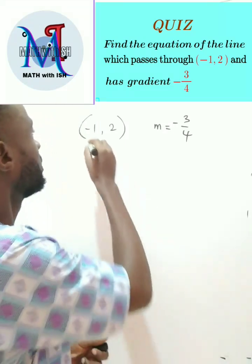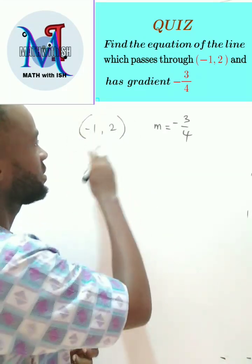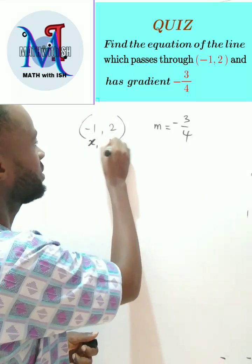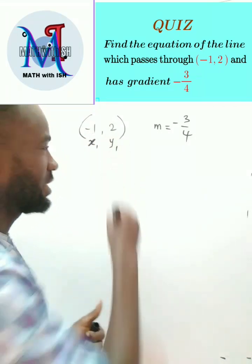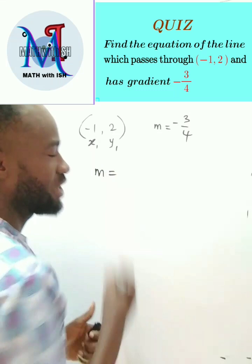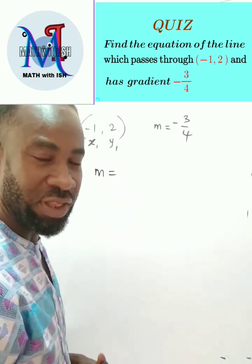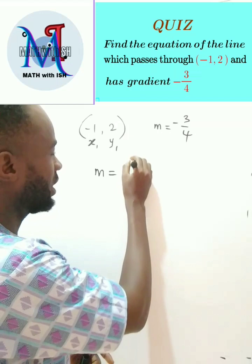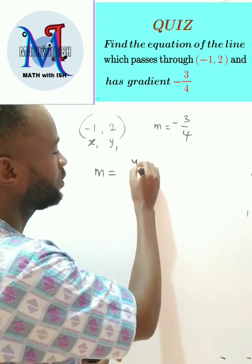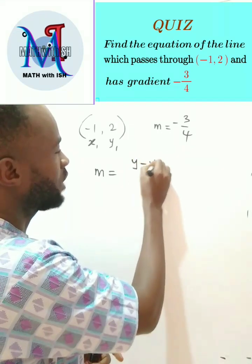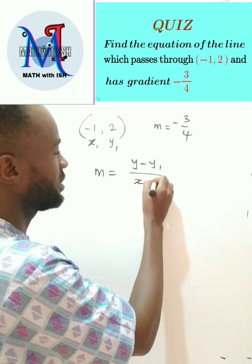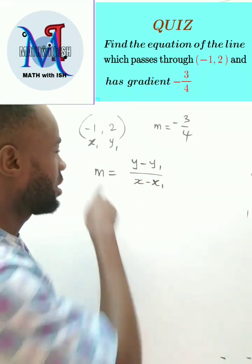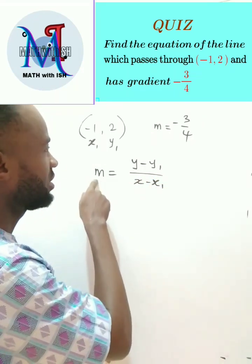Remember, these are coordinates, so I can call this x1 and this y1. Let's recall our formula for the gradient of a straight line: the gradient is given by the formula change in y, which is (y - y1) all over (x - x1). This is what we use, where our gradient has been given to us.